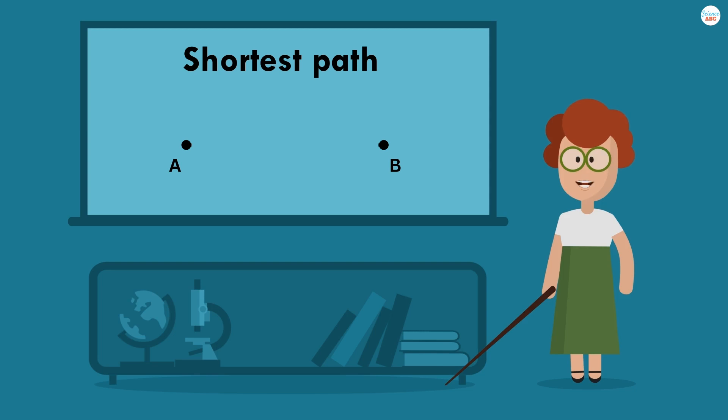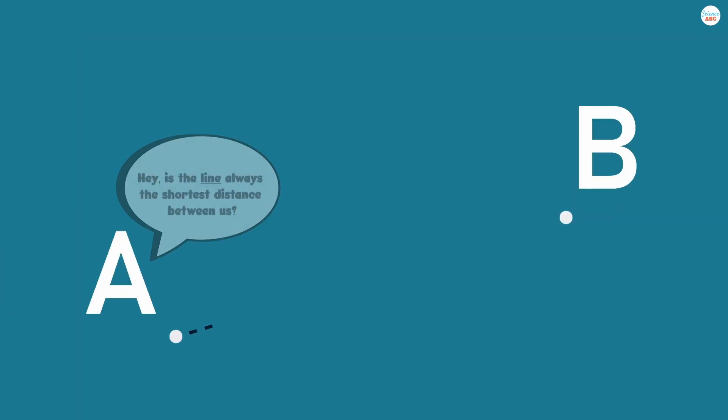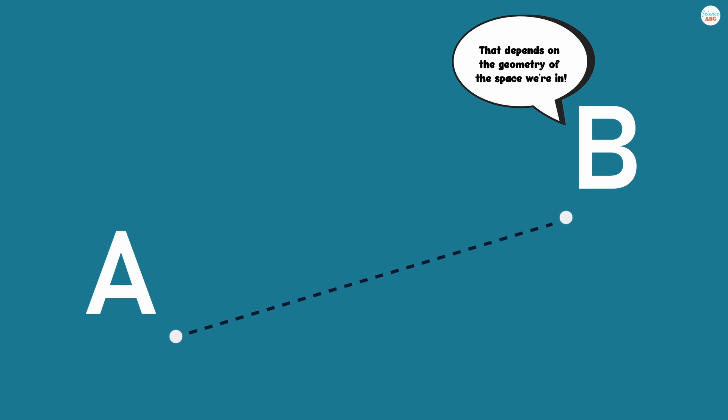Most of us were taught from an early age that a line is the shortest distance between two points. As it turns out, that statement is only partly true. The shortest distance between two points actually depends on the geometry of the object in question.